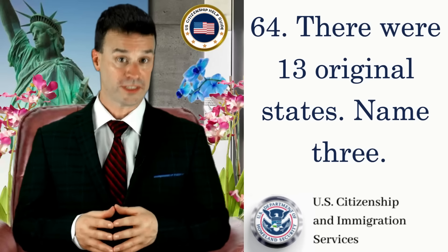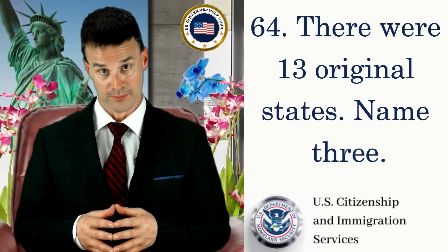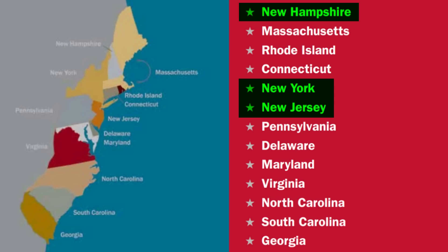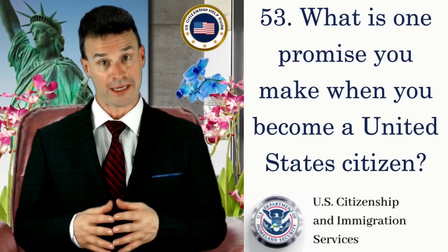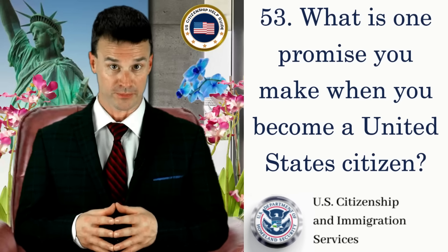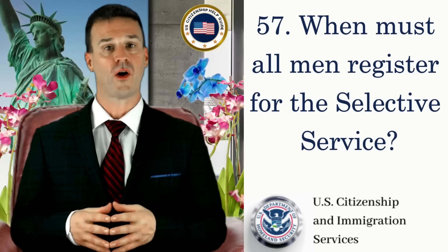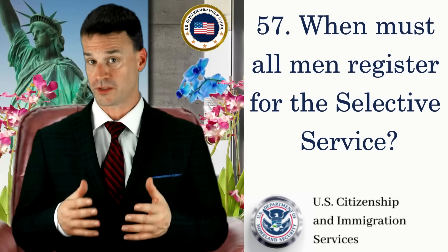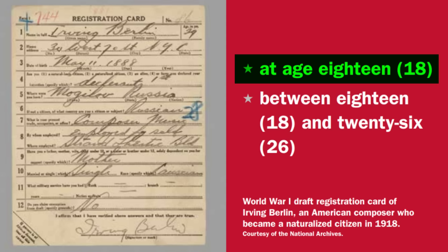There were 13 original states. Name three. New Hampshire, New York, New Jersey. What is one promise you make when you become a United States citizen? Obey the laws of the United States. When must all men register for the Selective Service? At age 18.